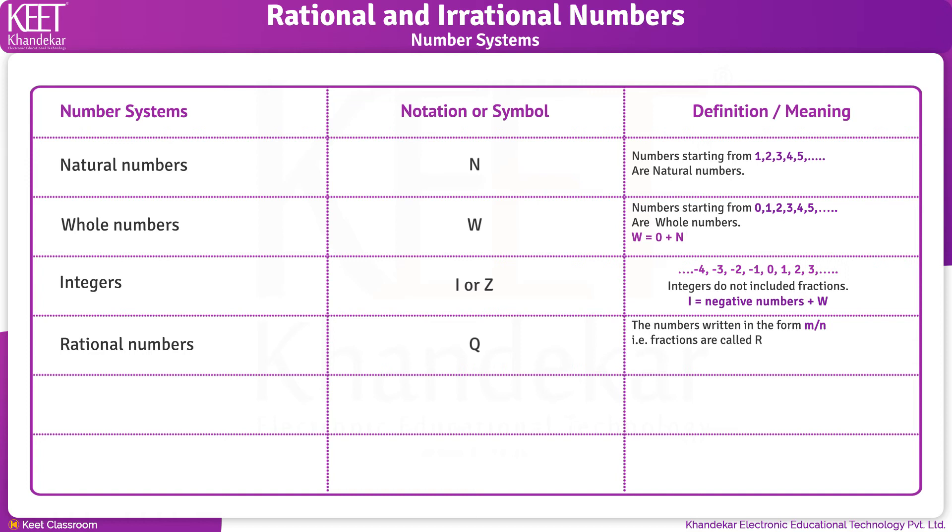Here, the denominator N is not equal to 0. Example: 1 upon 2, 1 upon 3, 2 upon 3, 4 upon 5 and so on.